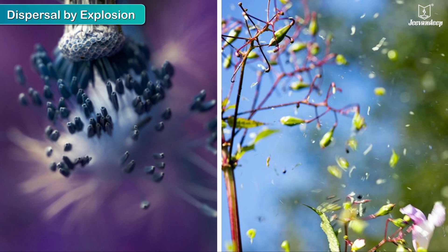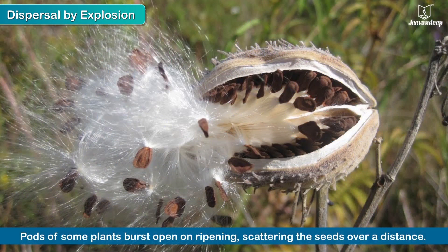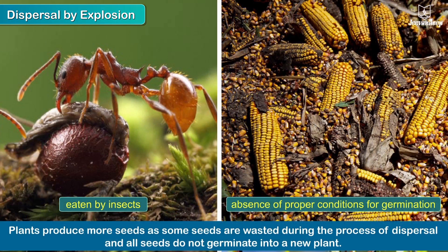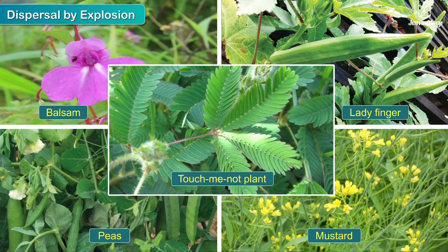Dispersal by explosion. Sometimes pods of some plants burst open on ripening, scattering the seeds over a distance. Plants produce more seeds as some seeds are wasted during the process of dispersal and all seeds do not germinate into a new plant. Examples include balsam, peas, ladyfinger, mustard and other such plants.